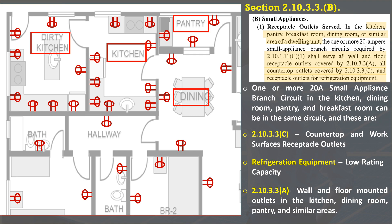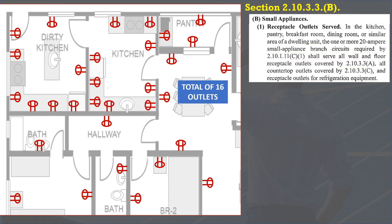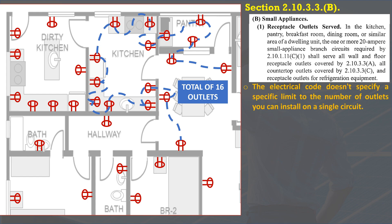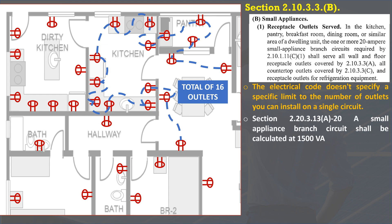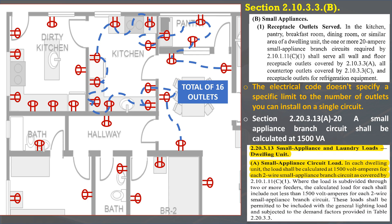Hence, small appliance branch circuits in the kitchen, dining room, pantry, and breakfast room can be in the same circuit. These include countertop receptacle outlets, refrigeration equipment, and wall and floor-mounted receptacle outlets in the kitchen, dining room, pantry, and similar areas. The illustration shows a total of 16 outlets that will be connected to the branch circuit. What are the code rules for the maximum number of outlets per circuit? The electrical code doesn't specify a specific limit to the number of outlets on a single circuit. However, this small appliance branch circuit shall be calculated at 1500 VA as specified in Section 2.20.3.13A.